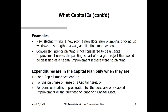A capital improvement adapts a capital asset to a new use or appreciably extends its life — like replacing the roof on a school — something more than ordinary maintenance. Examples of capital: a new roof, electric wiring, a new floor, new plumbing, strengthening a wall. Interior painting is our canonical example of something that is not capital. Expenditures make it into the capital plan when they are for a capital improvement, purchase or lease of a capital asset, or a study in preparation for such a purchase. Everything else should go into the operating budget.